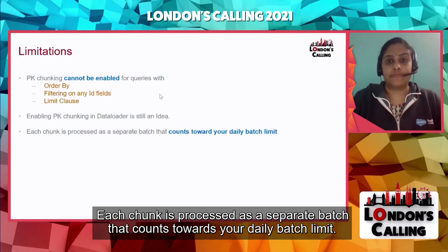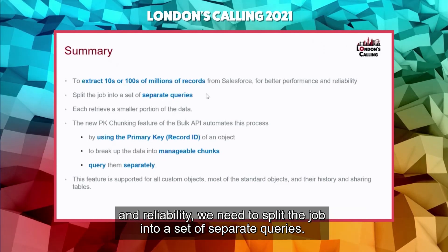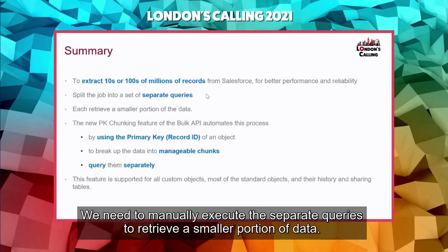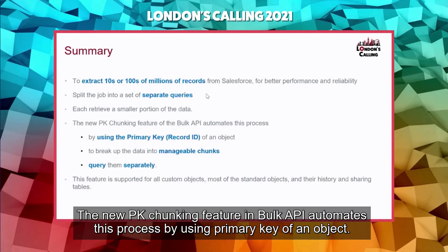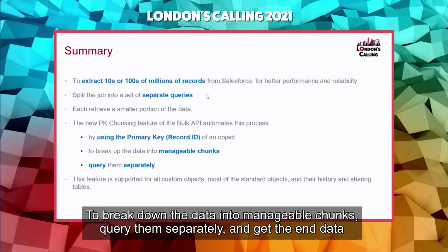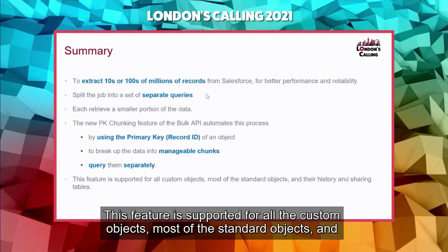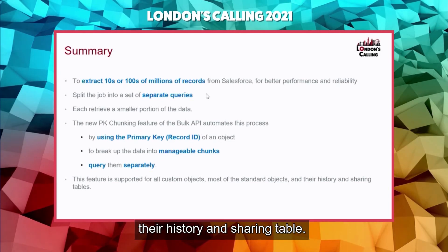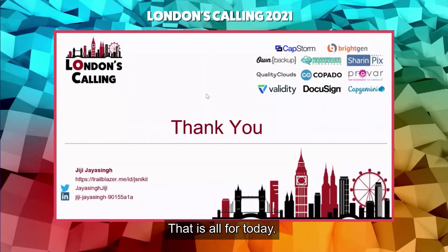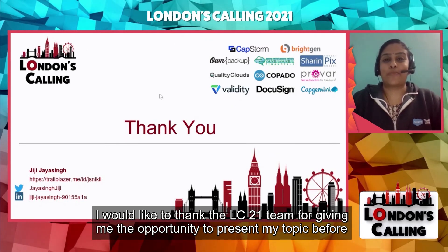To summarize: to extract tens or hundreds of millions of records from Salesforce with better performance and reliability, we need to split the job into separate queries, execute them to retrieve smaller portions of data, and then aggregate the entire result. The PK chunking feature in Bulk API automates this process by using the primary key of an object to break data into manageable chunks, query them separately, and retrieve the entire dataset easily and faster. This feature is supported for all custom objects, most standard objects, and their history and sharing tables. Thank you, and I'd like to thank the entire LC21 team for giving me this opportunity.